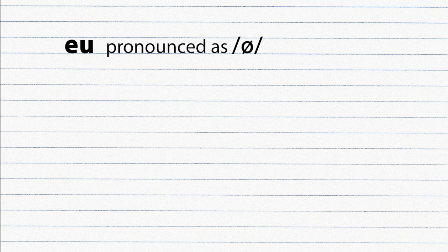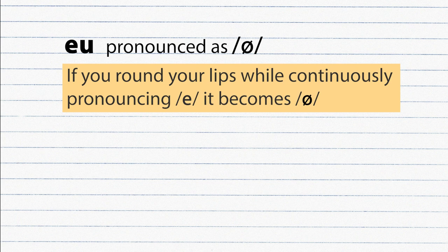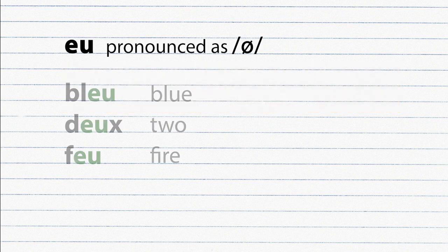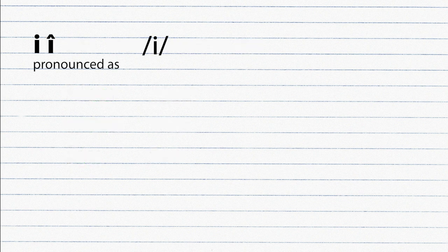EU is pronounced as Ö. Note, if you round your lips while continuously pronouncing E, it becomes Ö. Bleu, deux, feu.